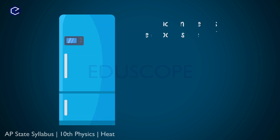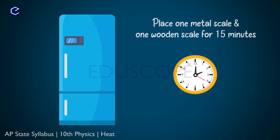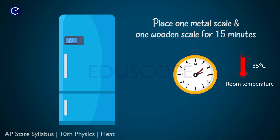What is the temperature of the scales before the fridge? They are at room temperature. Room temperature is 35 degrees, and the scales are also at 35 degrees.